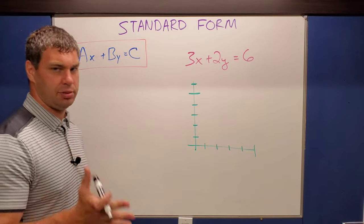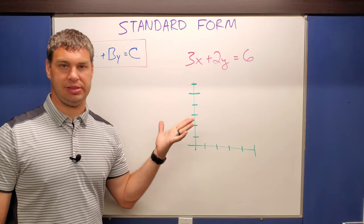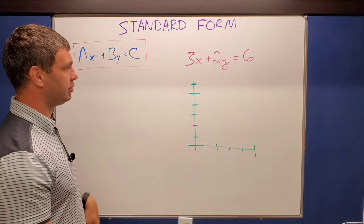The last of our three main forms is called standard form, and this is written in the form ax plus by equals c. When we go to write this a little bit later, you'll need to know that the a, b, and c all have to be integers, and there's a few other rules with that.